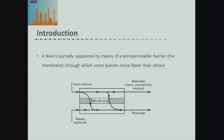The separation we're actually doing is we're taking our feed and separating it into a permeate and a retentate — material that passes through the membrane and material that doesn't pass through the membrane. To help with our separations, we can have an optional sweep gas in our permeate section, which helps push out the material that's passed through our membrane to reduce the concentration on the permeate side.